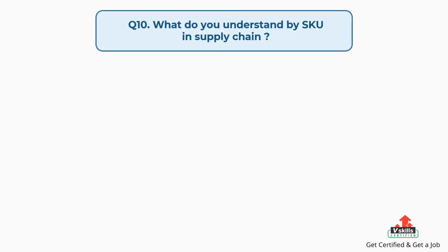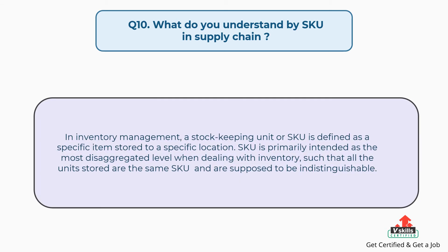Question number ten: what do you understand by SKU in supply chain? The answer is in inventory management, a stock-keeping unit or SKU is defined as a specific item stored at a specific location. SKU is primarily intended as the most disaggregated level when dealing with inventory, such that all the units stored are the same SKU and are supposed to be indistinguishable.